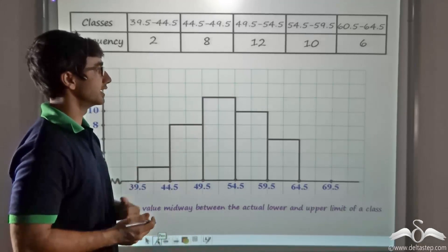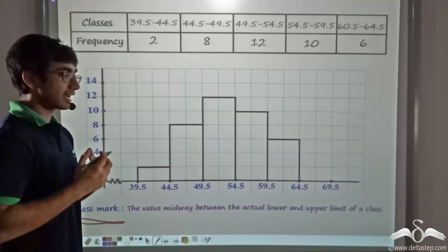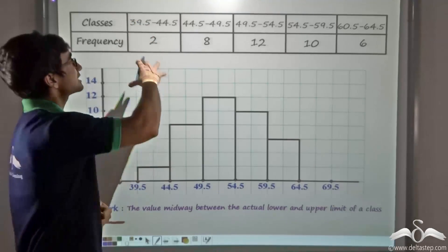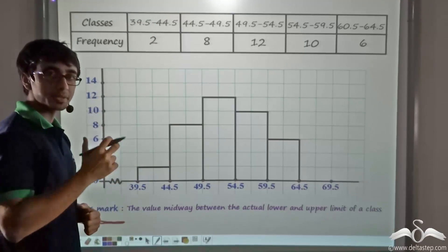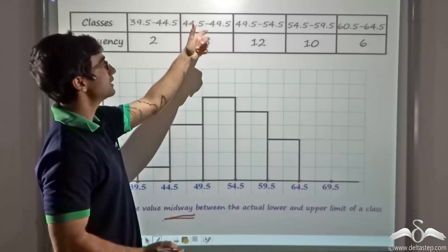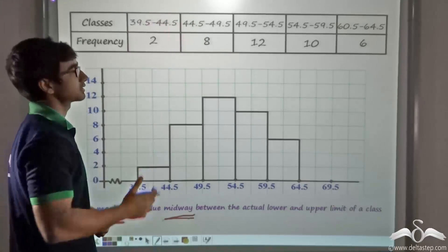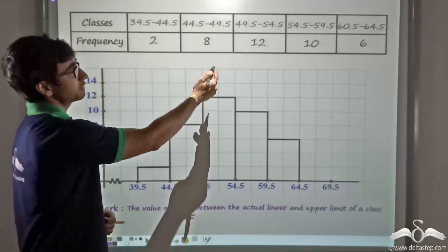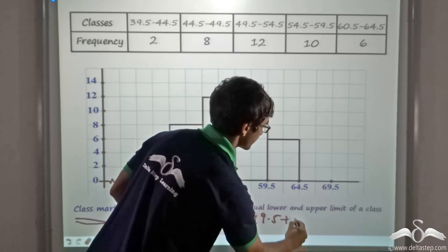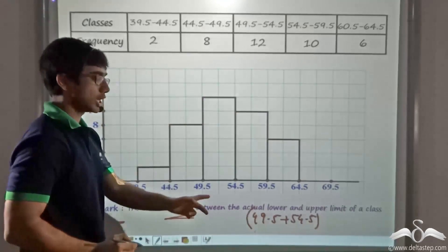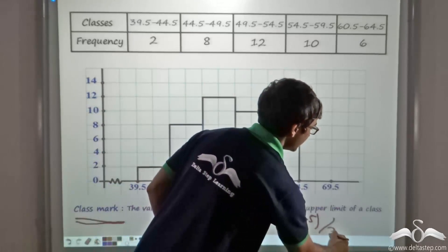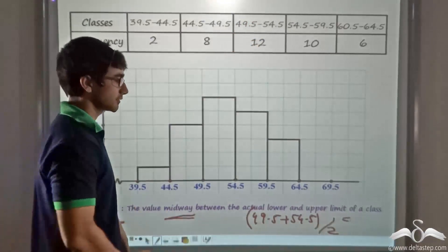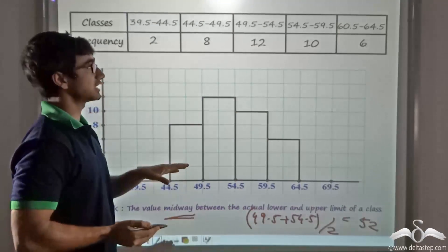Now let me introduce another important term that can be directly read from a histogram — the class mark. The class mark is a value that stands for or represents an entire class. It is the value lying midway between the lower class limit and the upper class limit, i.e., their average. For example, for the third class, 49.5 plus 54.5 equals 104, divided by 2 gives 52. So 52 is the class mark for the third class.